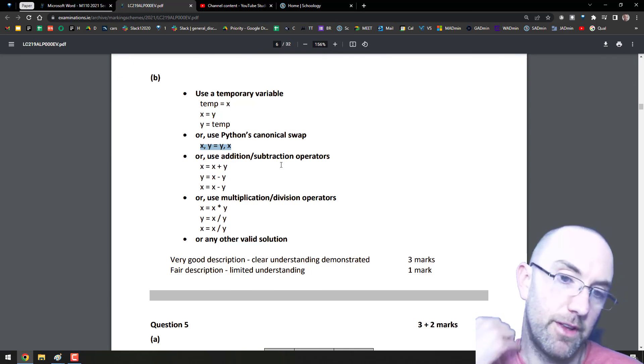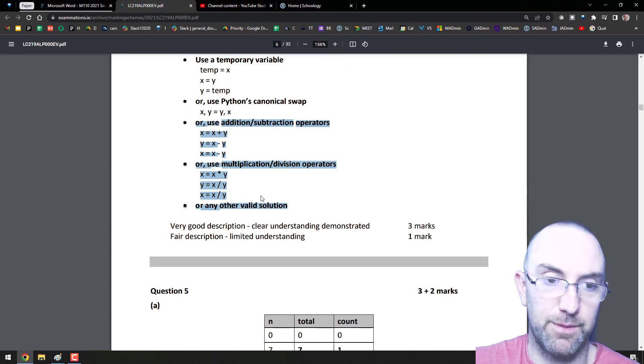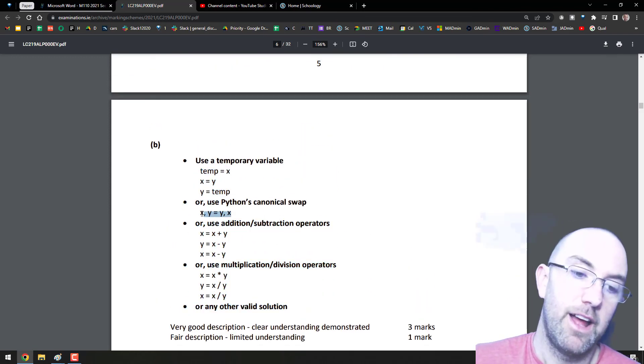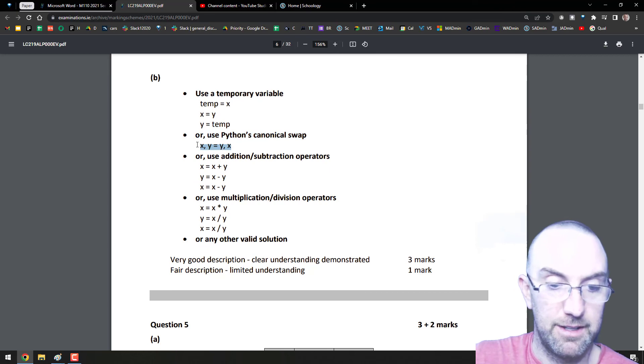It's not called the switcheroo, it's called canonical swap. Or use additional subtraction operators. I mean, I think that's a bit nuts. I don't know who would possibly do it this way. 90% of people will do it this way, and the 10% hardcore Python nerds would do it like this. Really, that is the nicest way to do it.